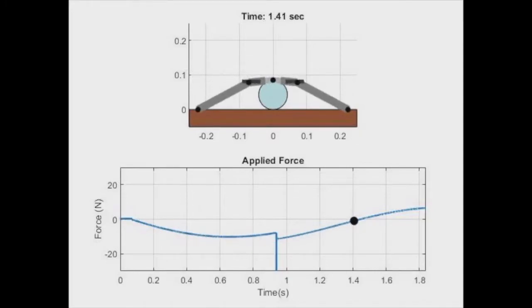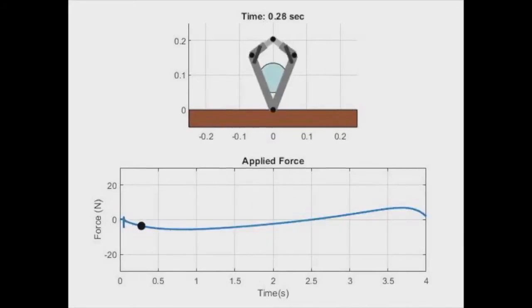The animation in top shows the gripper from the side, and the plot in the bottom gives us the applied force required to achieve this motion. When the applied force switches from negative to positive, this indicates that snap-through is occurring and the gripper will switch states.